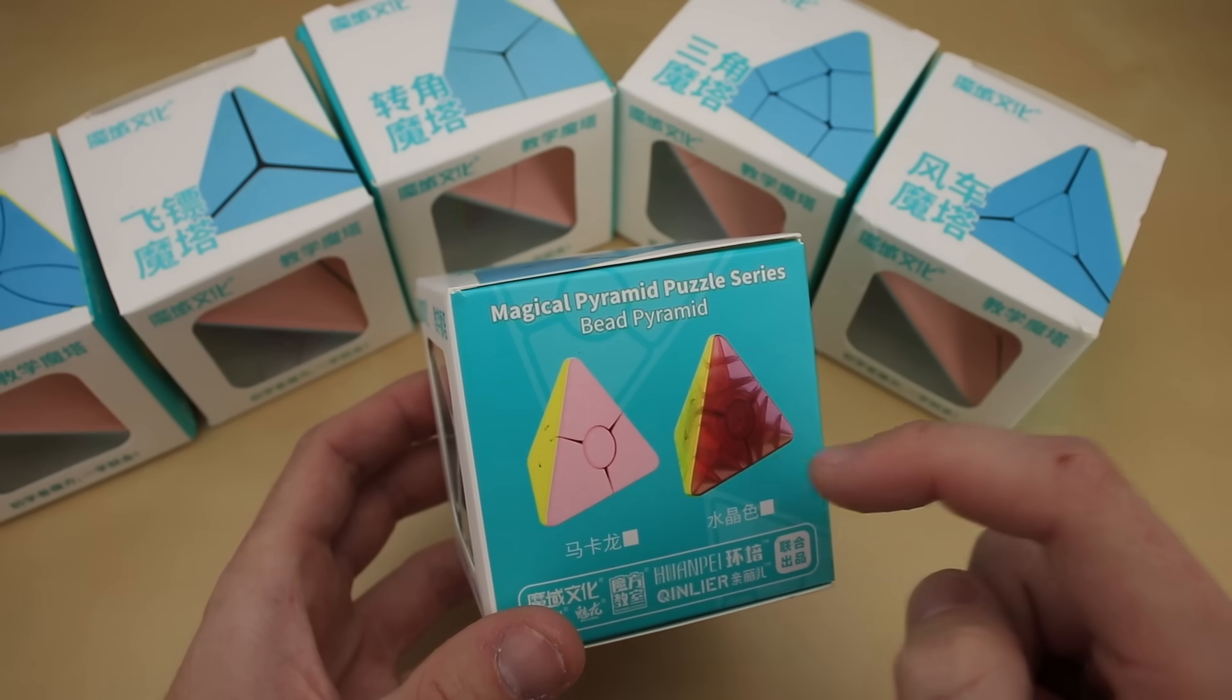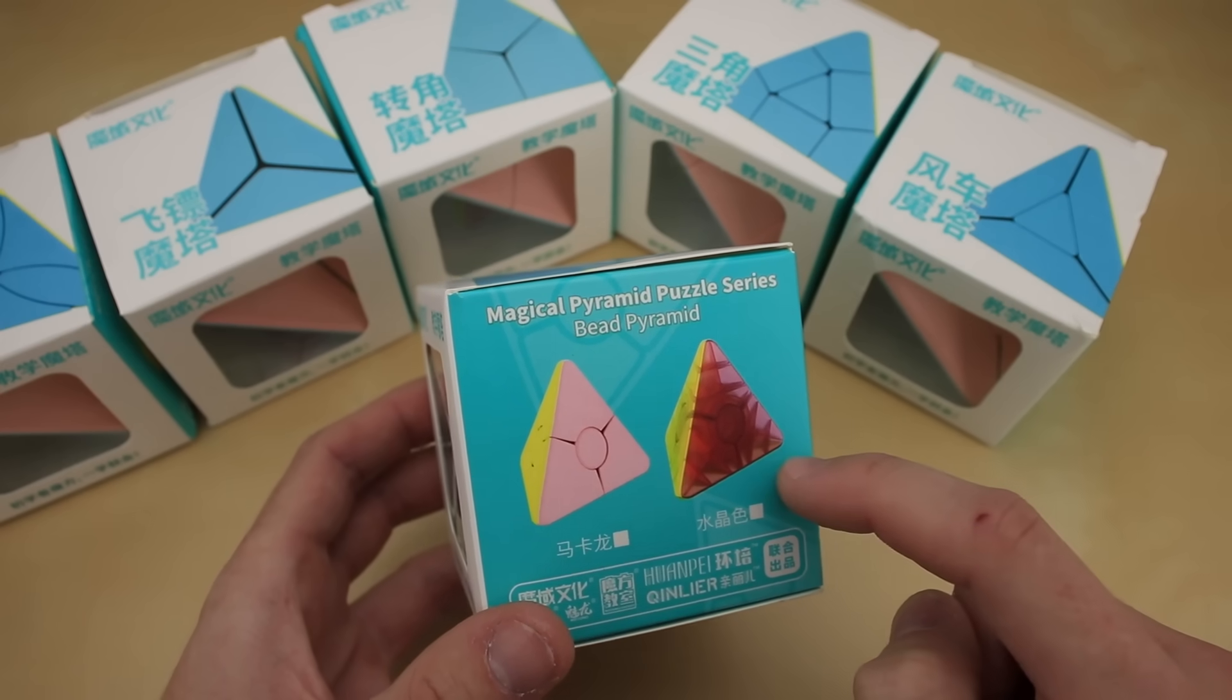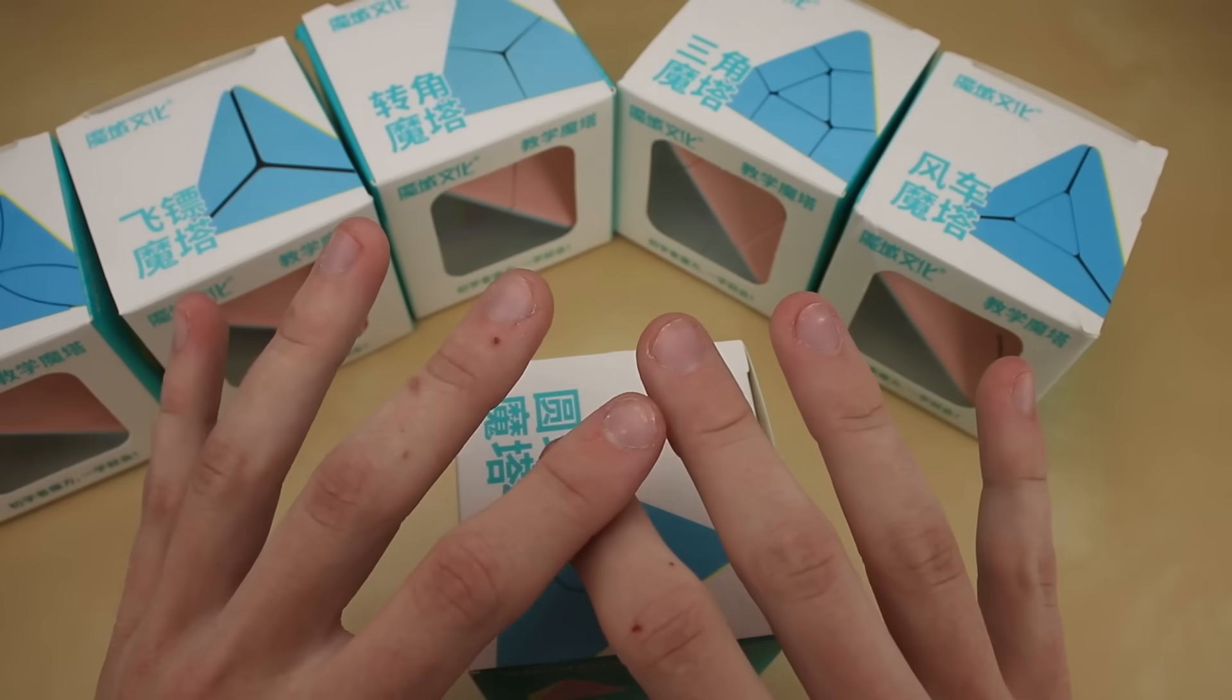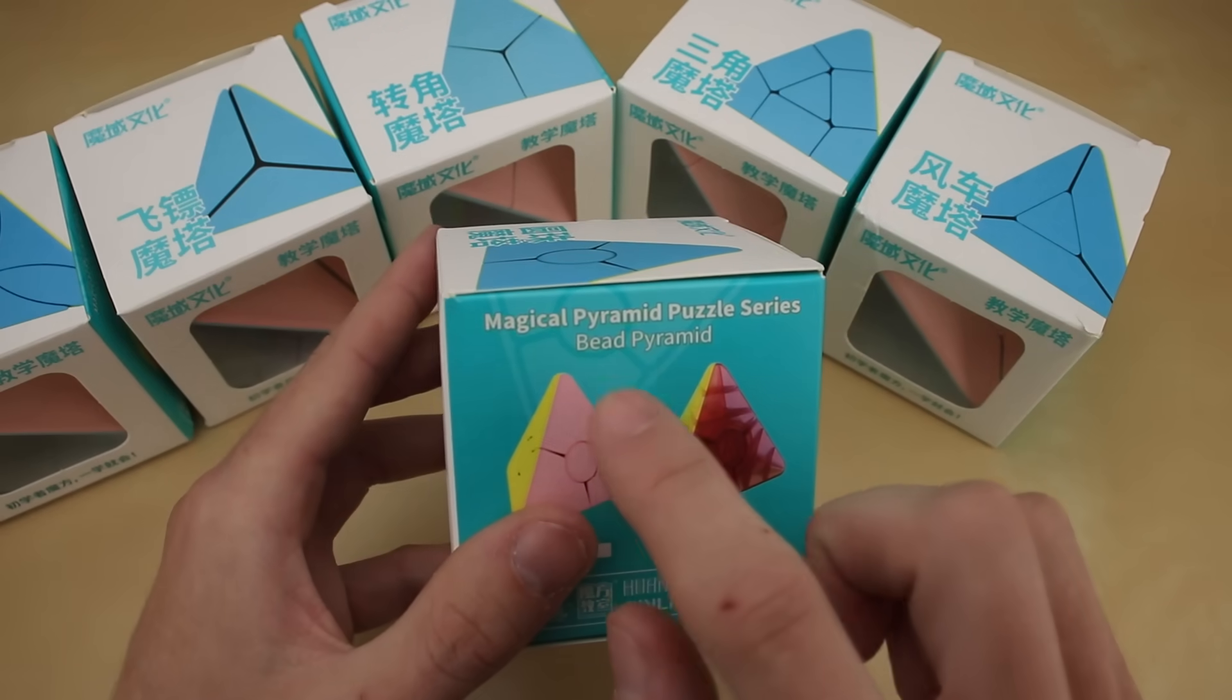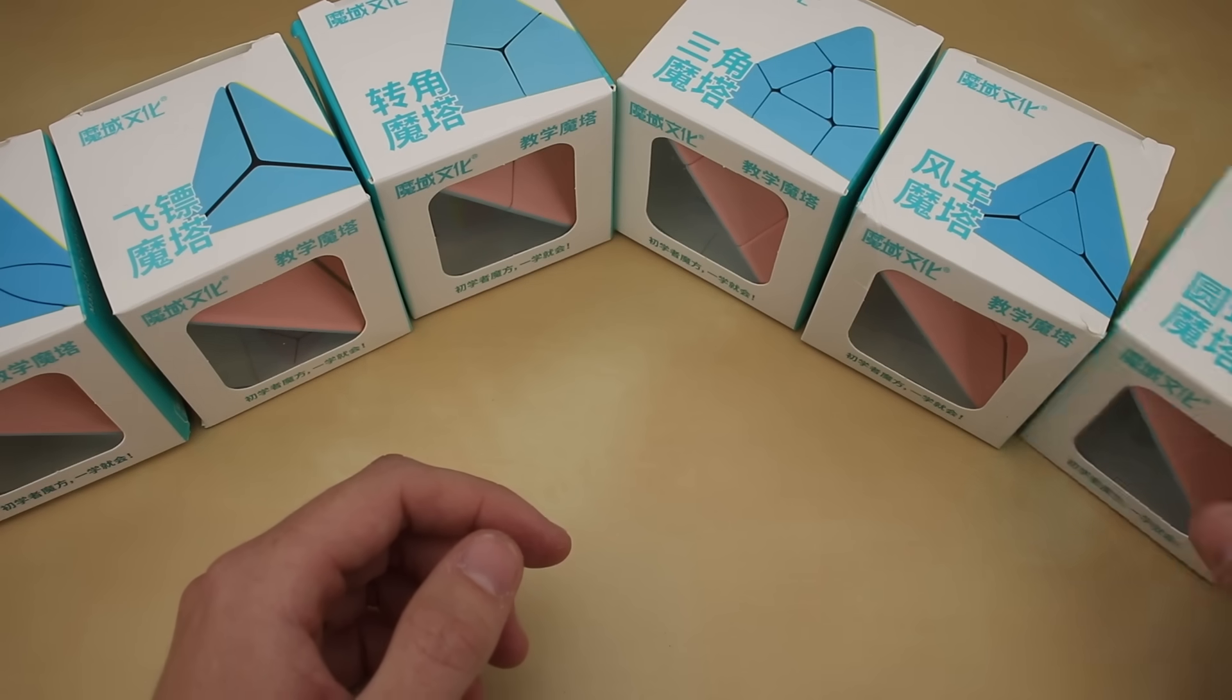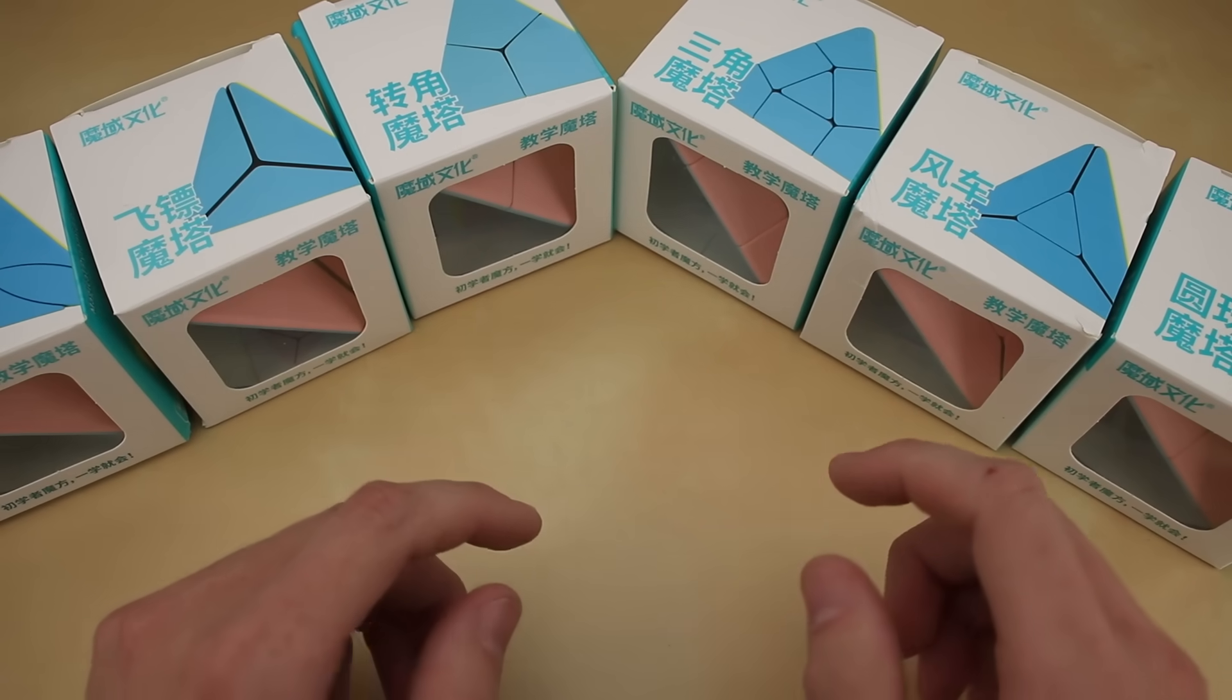It also has this semi-transparent version on the box, but I'm not quite sure where those are available. On the box it also says Magical Pyramid Puzzle Series, so I guess that's the official name for the entire lineup, and it also has an individual name for each puzzle, so this one is called the Bead Pyraminx.